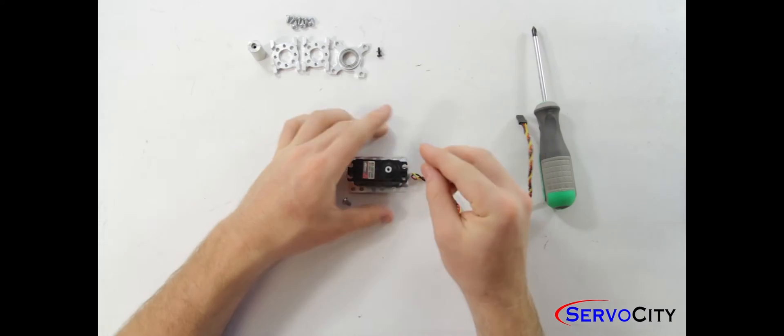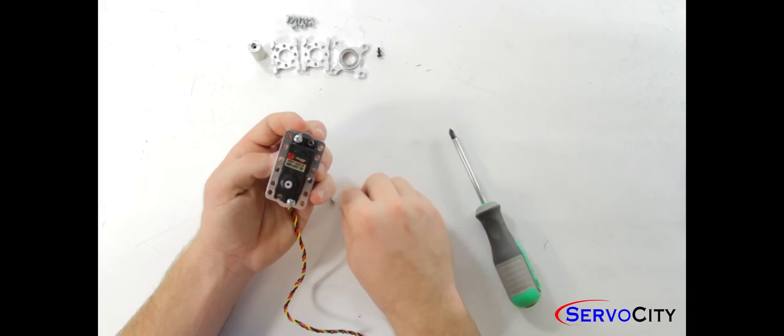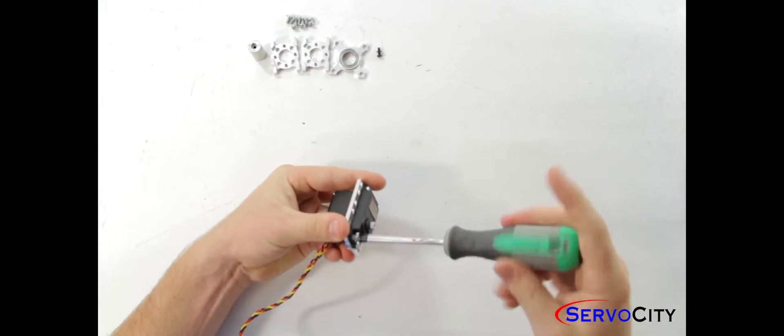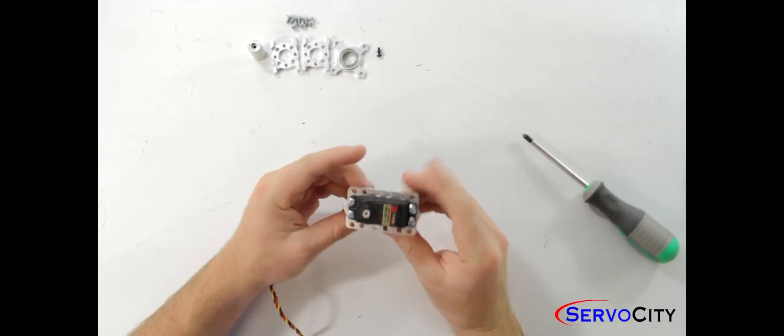Screws that come in the kit are the 632 by 1 quarter inch pan head screws. I am going to use 4 of them to fasten it to the servo. Once your servo is fastened to the plate it will look something similar to this.